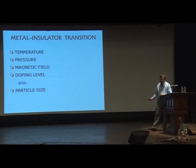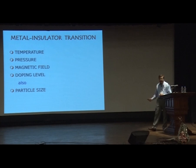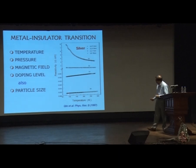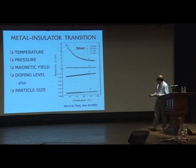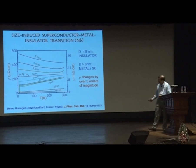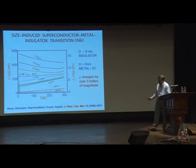The Kubo gap can lead to many other things. For example, the metal-insulator transition has been studied very frequently and can be changed by temperature, pressure, magnetic field, doping, and also by particle size. It was seen that a metal like silver can become completely insulating if you go to a size where the Kubo gap is larger than the thermal energies. We have a paper from 2006 where we took a superconductor and looked at the entire gamut of transitions from metallic superconductor to non-metal, then to an insulator, and to a complete insulator at about 5 nanometers.